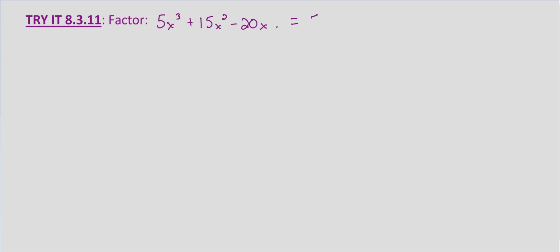And we do have X's in each one, so we know we're going to have a term that factors out. And then X cubed, X squared, and X. The greatest common factor is X. So we'll factor out the 5X first.